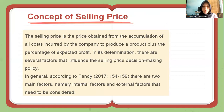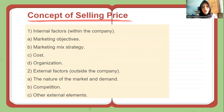The next is the concept of selling price. The selling price is obtained from the accumulation of all costs incurred by the company to produce a product, plus the percentage of expected profit. According to Fendi, there are two main factors that influence selling price decision making: internal factors — including marketing objectives, marketing mix strategy, cost, and organization — and external factors — including the nature of the market and demand, competition, and other external elements.